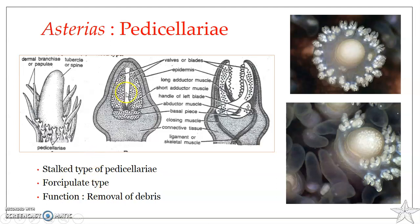When you speak about the valves or blades, the opposing surfaces of the two valves are serrated, as you can see here. The valves open and close with the help of muscles — the adductor muscle and the abductor muscles — which help in opening and closing of the two valves.